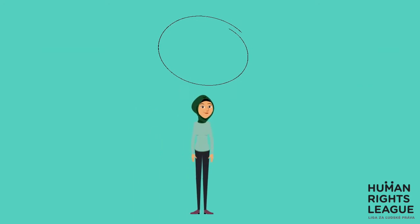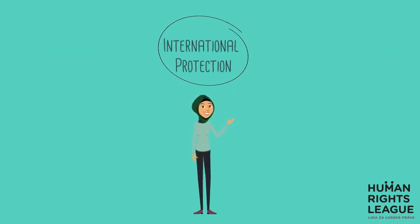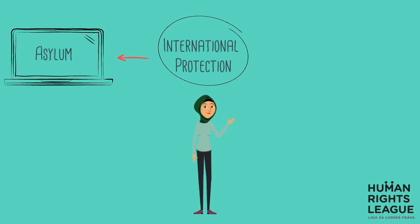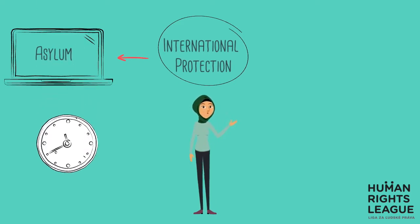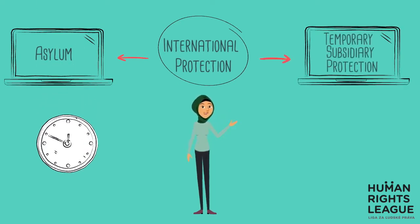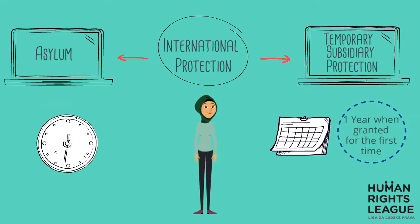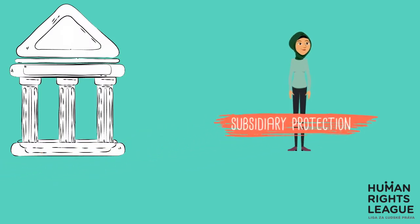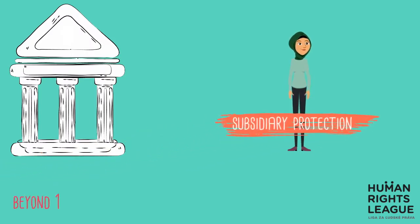We recognize two types of international protection in Slovakia: asylum, which is granted for an indefinite period of time, and temporary subsidiary protection, which is granted for one year when it is granted for the first time. If reasons for providing subsidiary protection persist beyond one year, the temporary subsidiary protection may be prolonged for another two years.